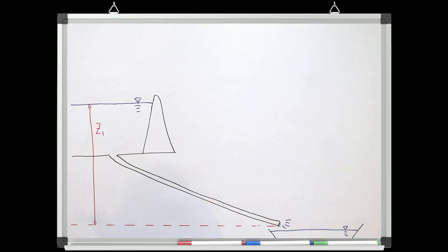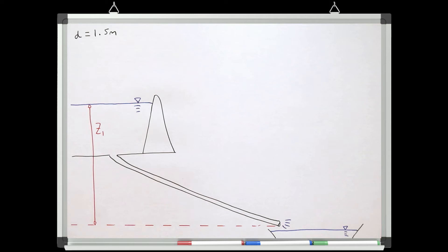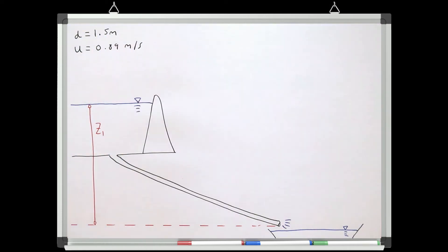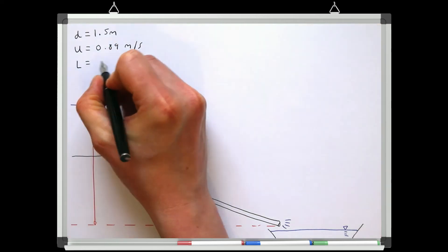So in this example we have a large reservoir with a pipe that is taking water from a storage reservoir to a destination reservoir. The pipe is 1.5 meters in diameter. And in order to meet Birmingham's drinking water demands, the system needs to run at a velocity of 0.89 meters per second to provide a sufficient discharge to supply Birmingham with the water it needs. And the pipe has a total length of 117,000 meters.